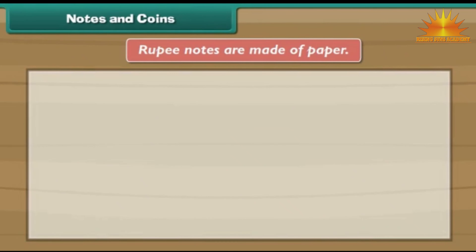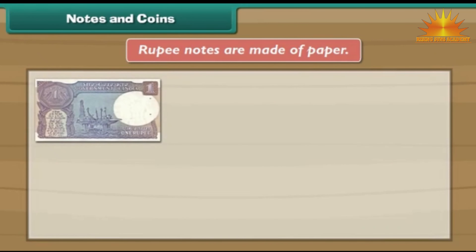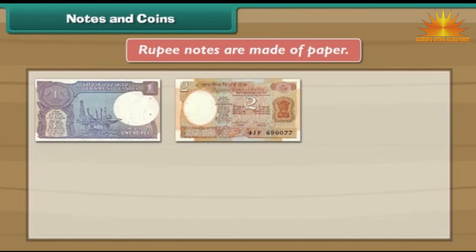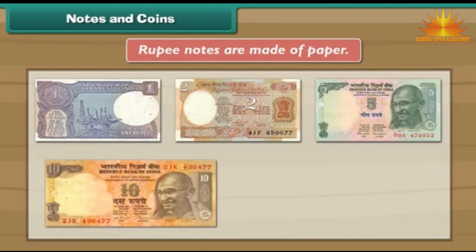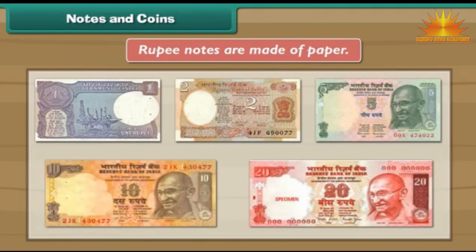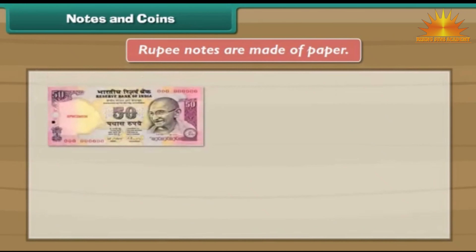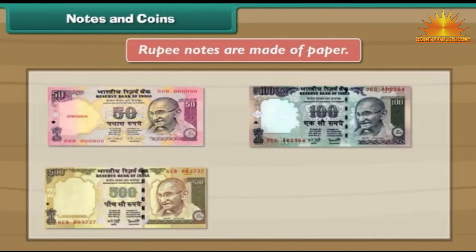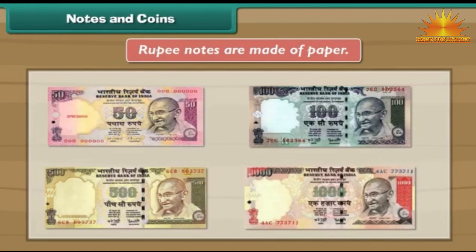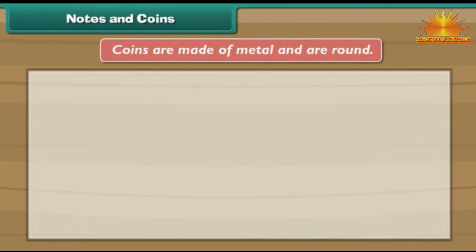Rupee notes are made of paper. There are 1, 2, 5, 10, 20, 50, 100, 500 and 1000 rupee notes.